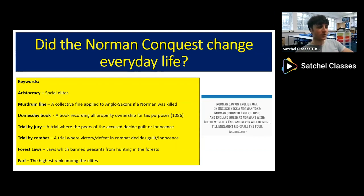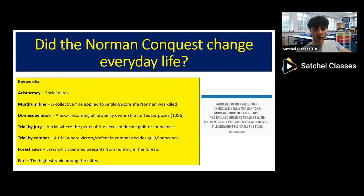Then we have the Domesday Book — you probably know this already, but it was a book that recorded all property ownership in the country for the purposes of tax. It was one of William's methods of control and of increasing his finances, and it was brought in in 1086. Then we have 'trial by jury' — a new kind of trial that only Norman aristocrats could demand.